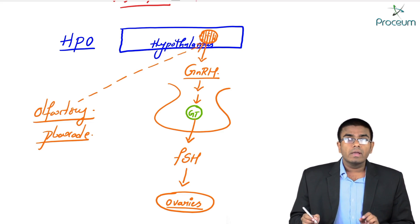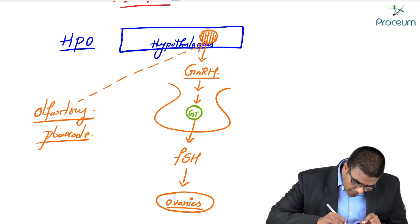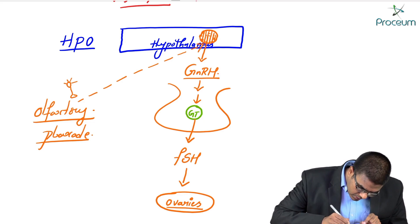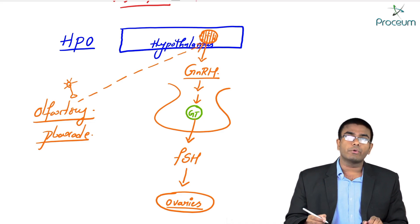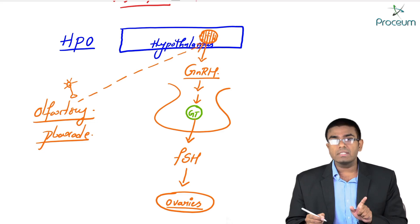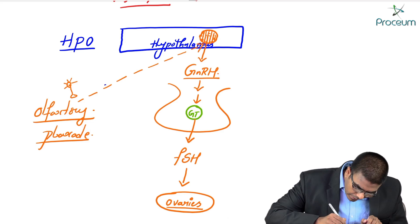In Kallmann syndrome, what actually happens? Before discussing that, one more important concept: for the migration of GnRH-producing neurons from the olfactory placode to the hypothalamus, you need a specific protein. This protein is necessary for the migration.